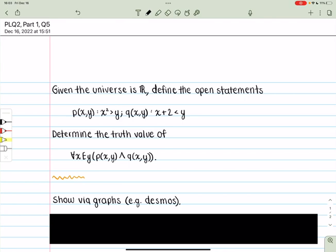Now we're asked to determine the truth value of the proposition that for all x there exists a y such that the statement P and the statement Q are both simultaneously true.